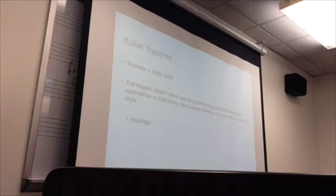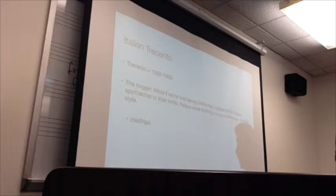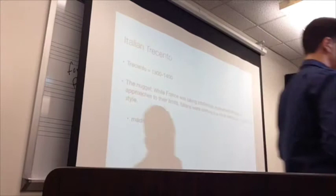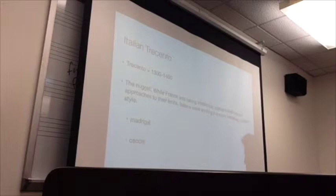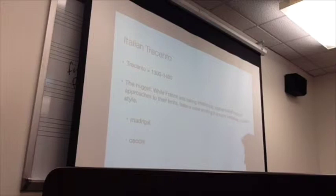Let's turn to number 31 in your anthologies and we'll listen to a piece by Jacopo da Bologna. Before I play this, let me introduce the other Italian styles: the madrigal, the caccia, and the ballata. The madrigal is a two-voice vocal work. The caccia refers to the hunt — from the Italian word to hunt. The ballata refers to the dance.